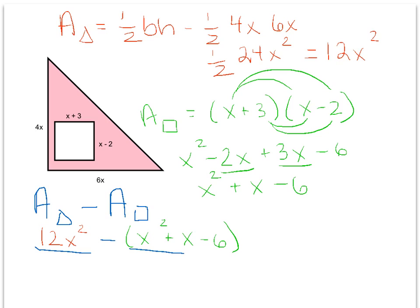So now I have to actually subtract. I'm going to have to distribute. This negative really is a negative 1, so I'll apply it to everything. So I'll take my 12x squared and rewrite it exactly as is, and then I'll have negative x squared minus x, and negative 1 times negative 6 is a positive 6. I can see that I have a couple like terms to combine.